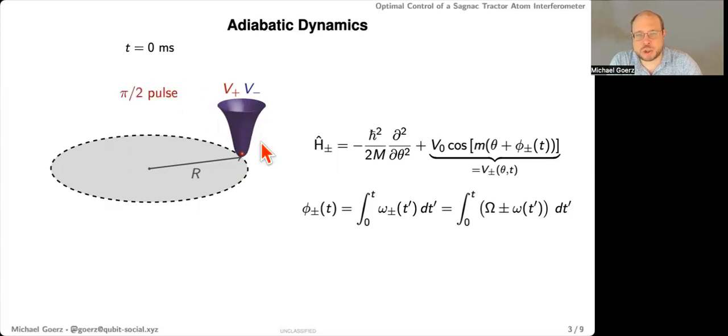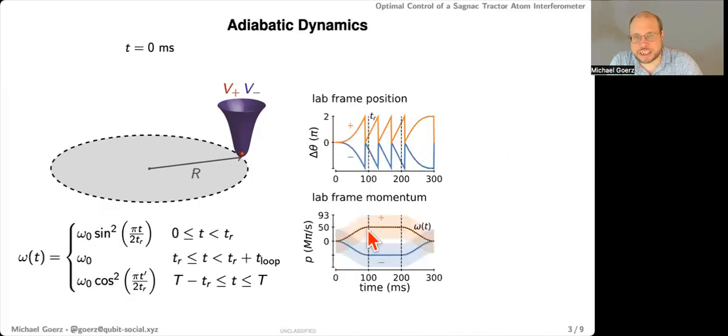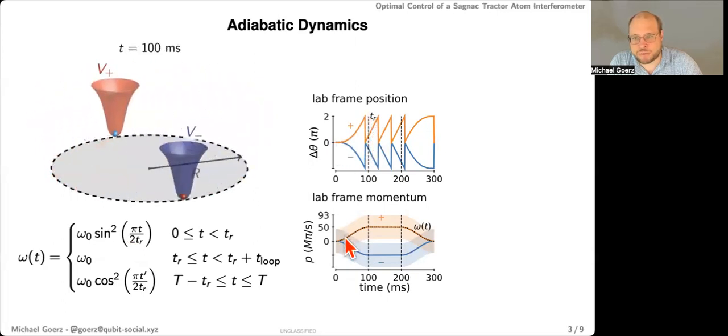And then we'll apply pi over two pulses to put it into a superposition of the two spin states. So that's the superposition of the wave packets in this v plus and v minus potential. And now we're going to start counter-rotating that by setting a function omega of t that accelerates and then decelerates these potentials. So in the first stage between zero and t, we're going to accelerate smoothly from zero to a value of omega zero of 50 pi per second. And you can see that here rotating in the lab frame. And for the momentum, you can see it going from zero to 50 pi per second. And you can already tell that it's adiabatic because the momentum actually follows exactly the omega of t.